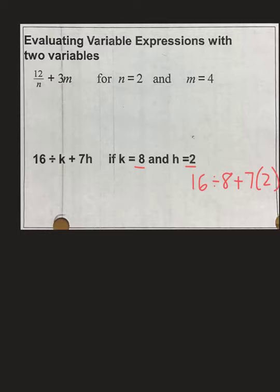Again, when we read it from left to right, this division comes first. So, 16 divided by 8 is 2. Bring down everything else. Then, we have multiplication and addition. Multiplication comes first. So, bring down 2 plus 7 times 2 is 14. Final answer, 2 plus 14 should have gotten you 16.